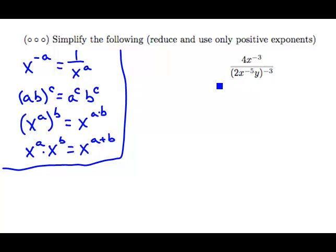So I'll begin by taking care of the exponent in the denominator, the negative 3 exponent, and distributing it through the product. So I'll have a 2 to the minus 3, an x to the minus 5 to the minus 3, and a y to the minus 3.